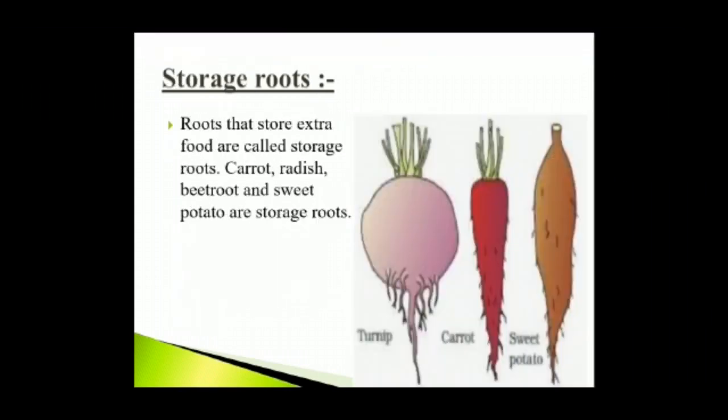Storage roots: Roots that store extra food are called storage roots. Extra food made by the plant is stored in the root in the form of starch. During shortage of food due to crop failure, flood, drought or famine, people eat them as food. Famine means shortage of food. Carrot, radish, beetroot and sweet potato are storage roots. The roots of asparagus and pumpkin store water for the plant to be used in hot summer months.